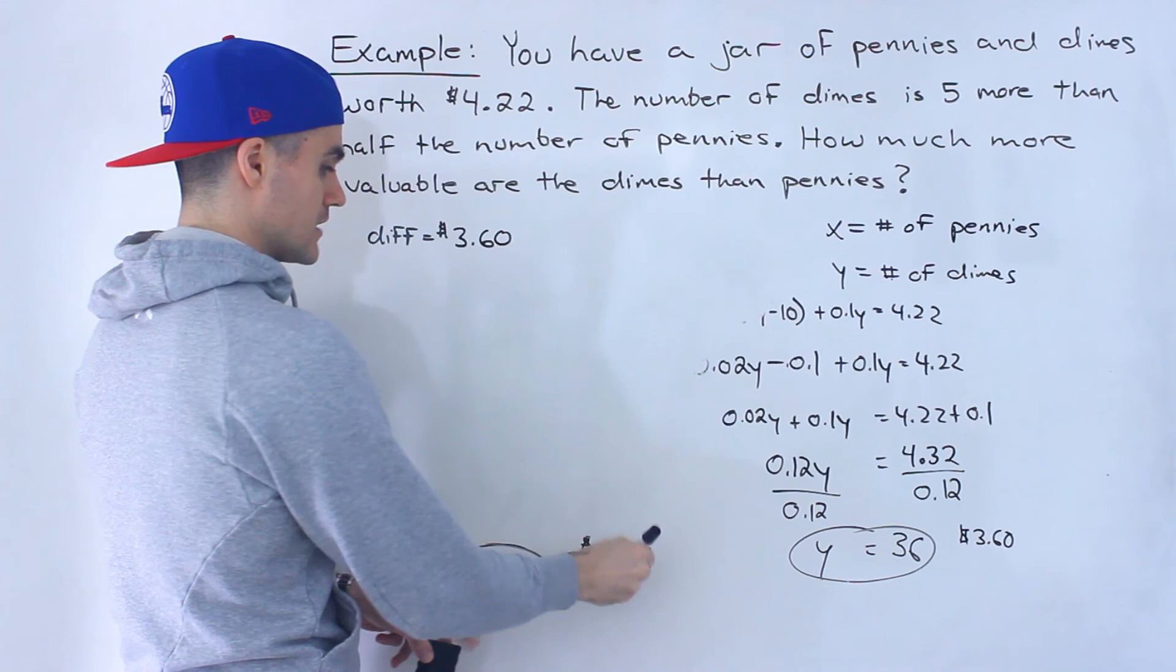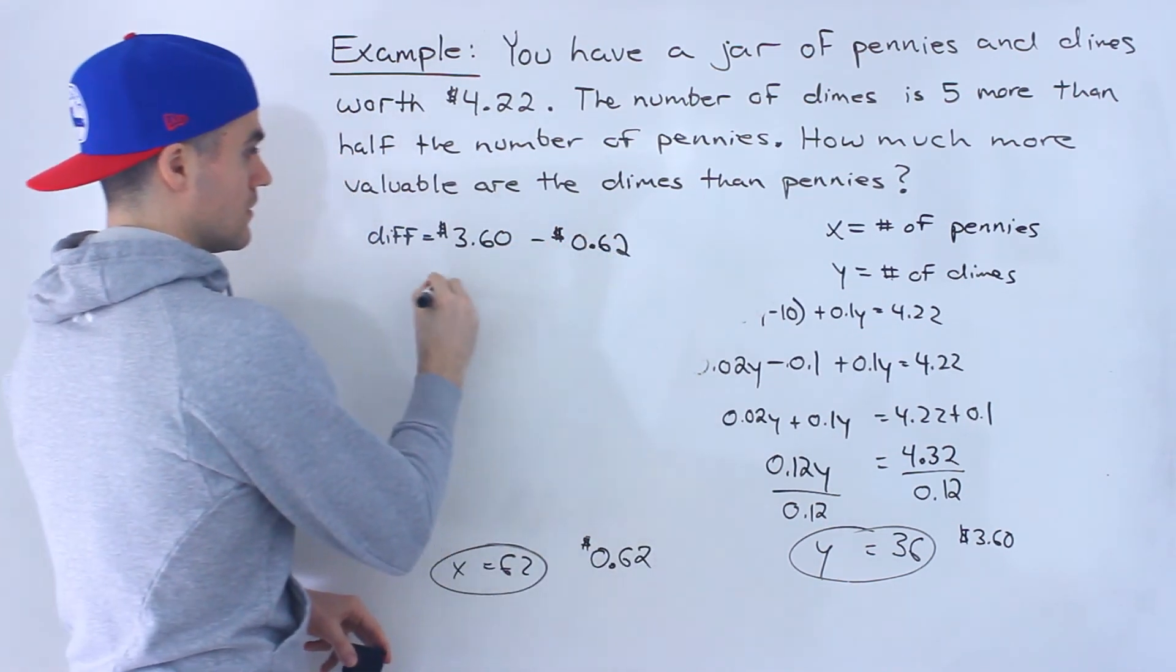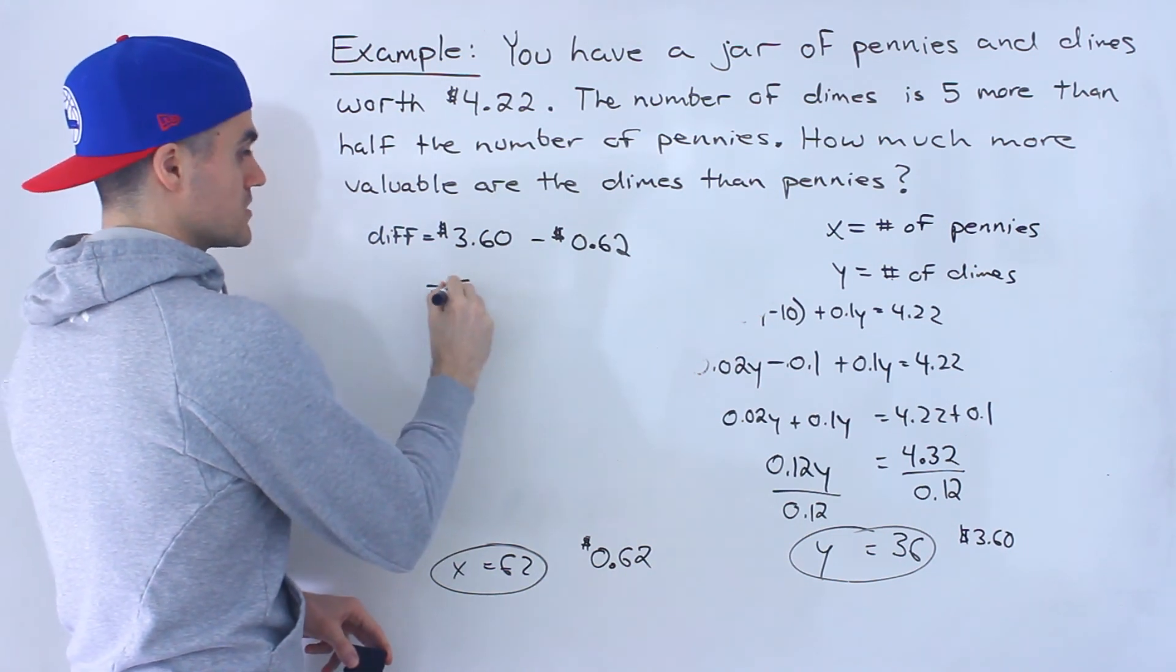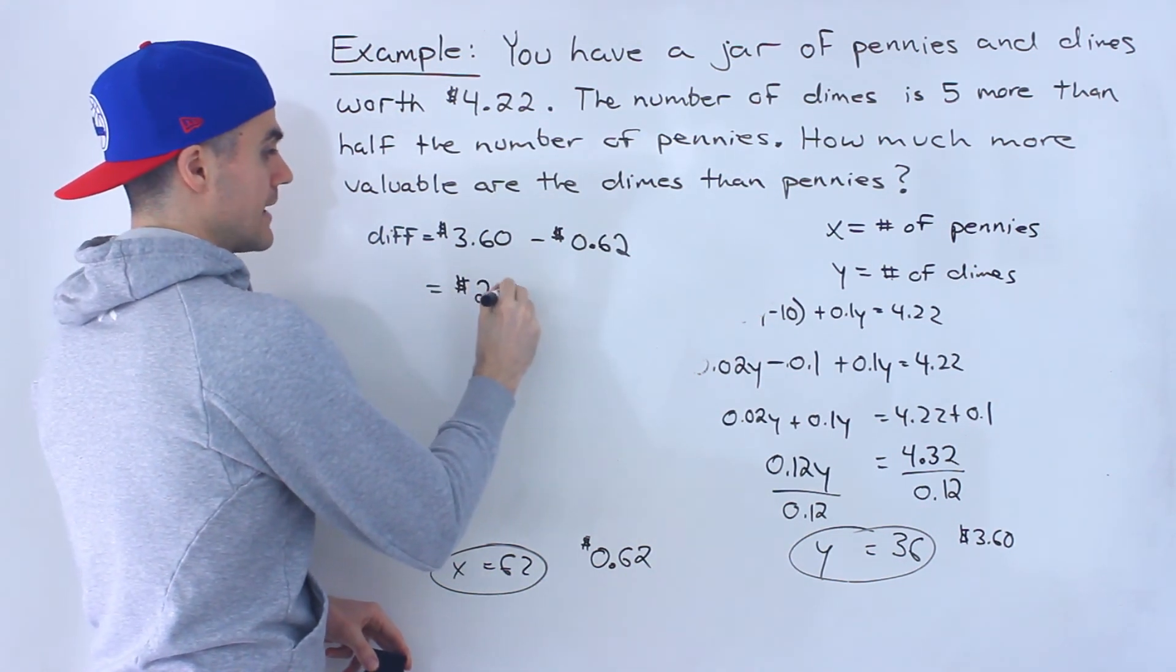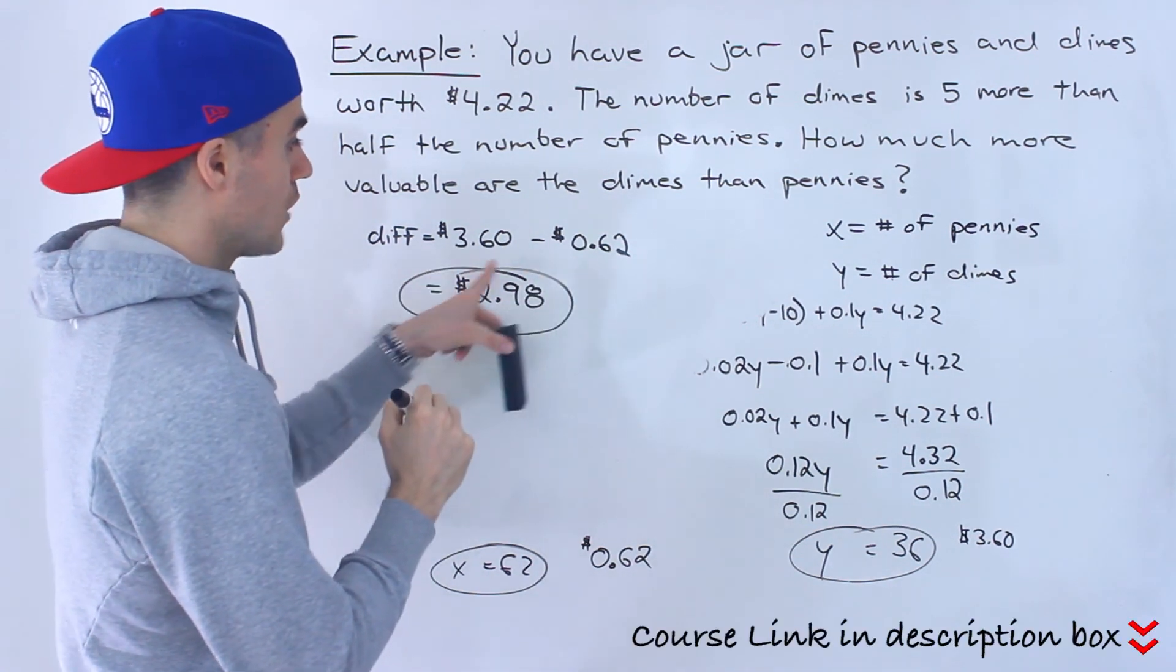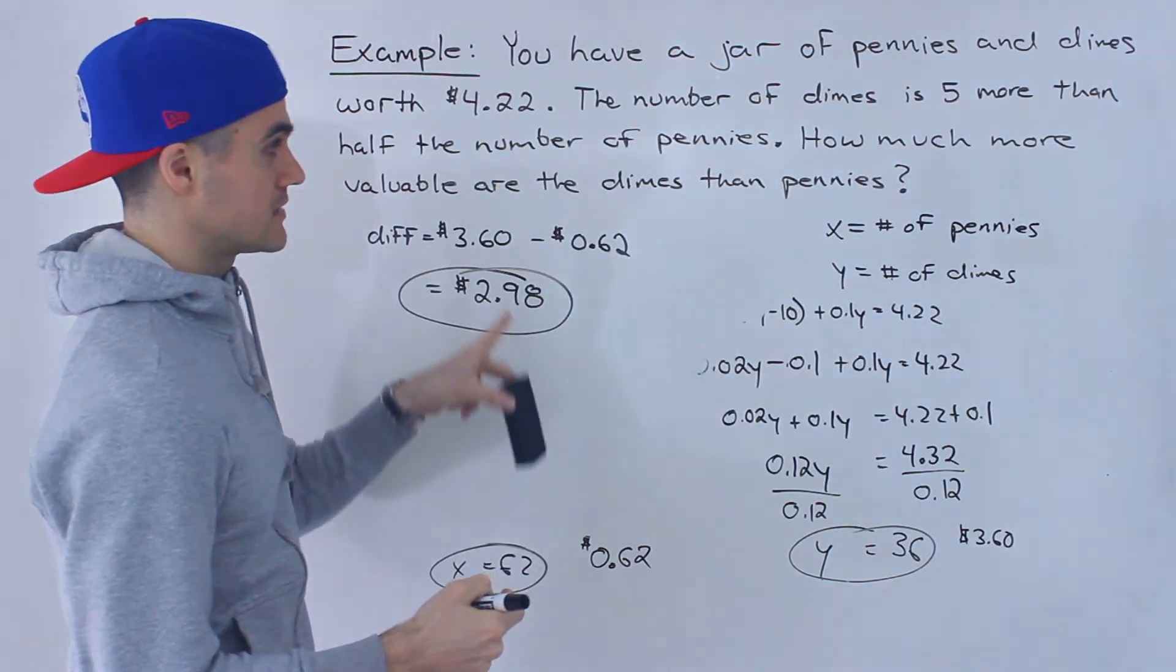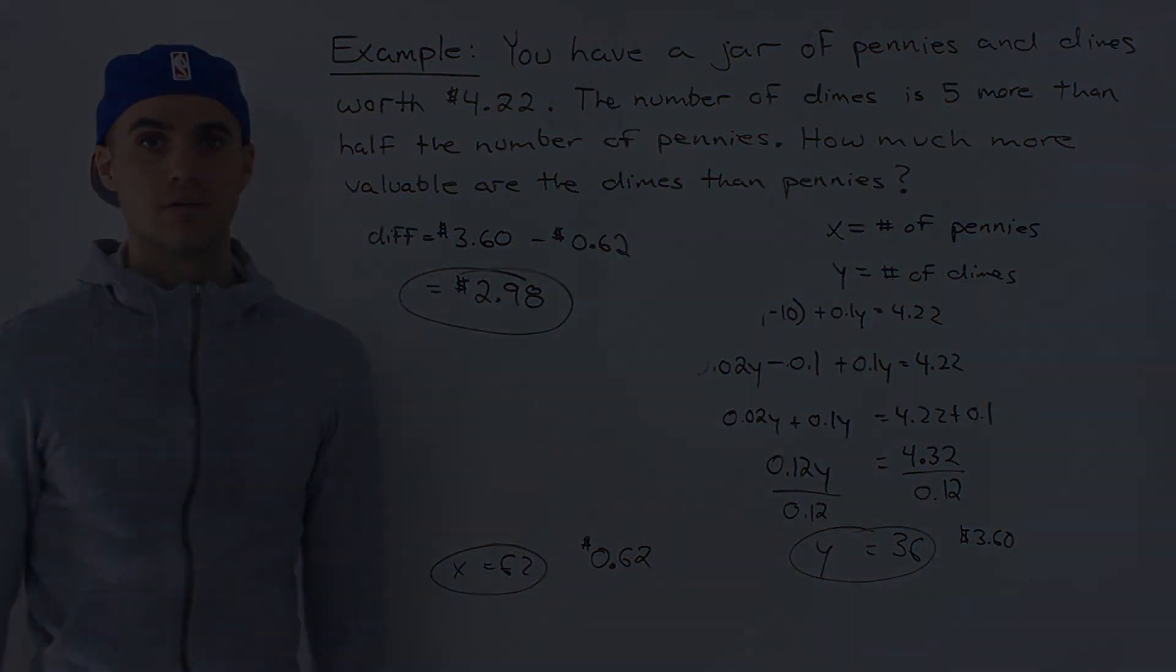And then the pennies are worth 62 cents. So when we subtract these, we would end up getting two dollars and 98 cents. That's what the difference is. So the dimes are two dollars and 98 cents worth more than the pennies. So this here is the final answer.